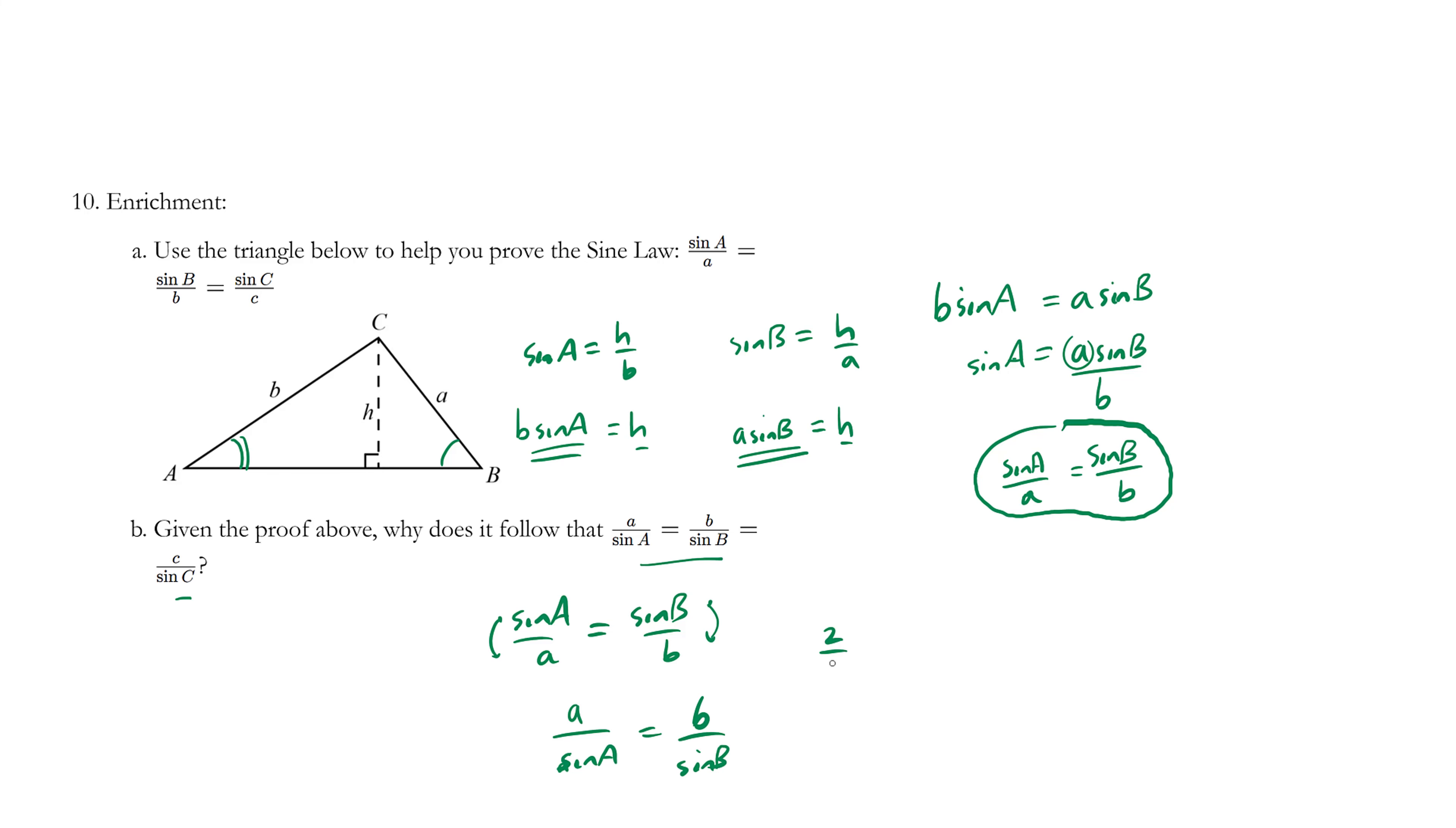Much like two-thirds is equal to two-thirds, or same thing as four-sixths. And if you flip both sides, the statement remains true that three over two equals six over four. That's okay. Can you prove the sine law?